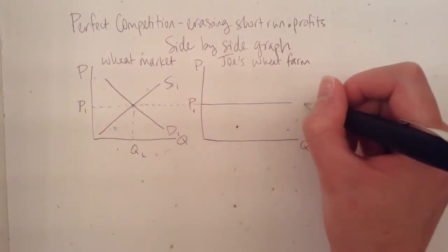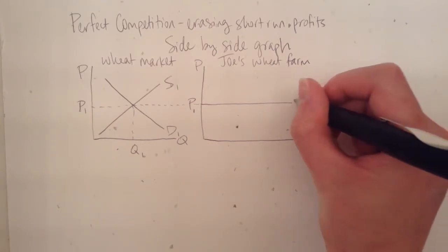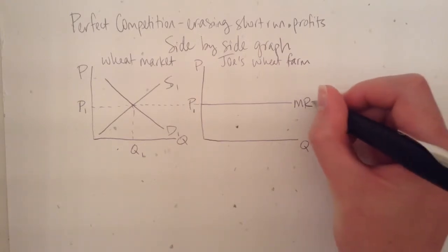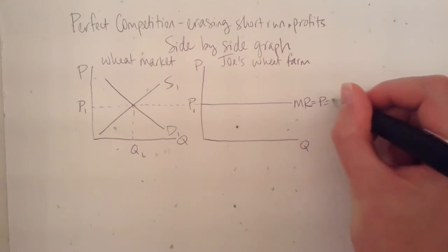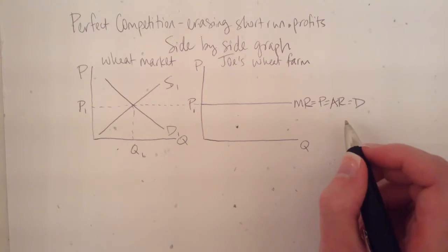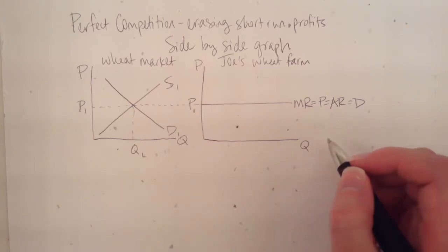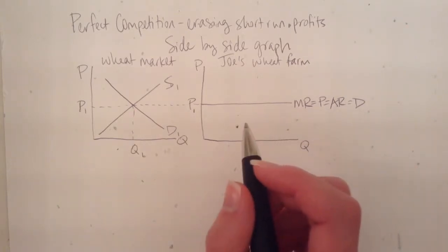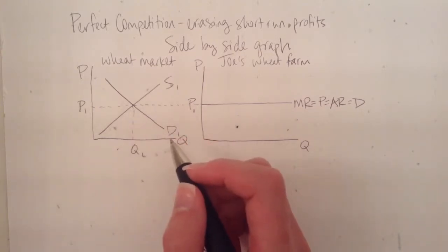This curve is the demand curve for Joe's Wheat Farm, but it also represents the marginal revenue that Joe gets from selling wheat. It also represents the price, the average revenue, and his demand. So a good way to remember this that I've heard from other teachers is to call it the Mr. Party Curve, and I really like that tip, so I use it too. So we've got Joe's Mr. Party Curve, which is at the same exact level as the market price.